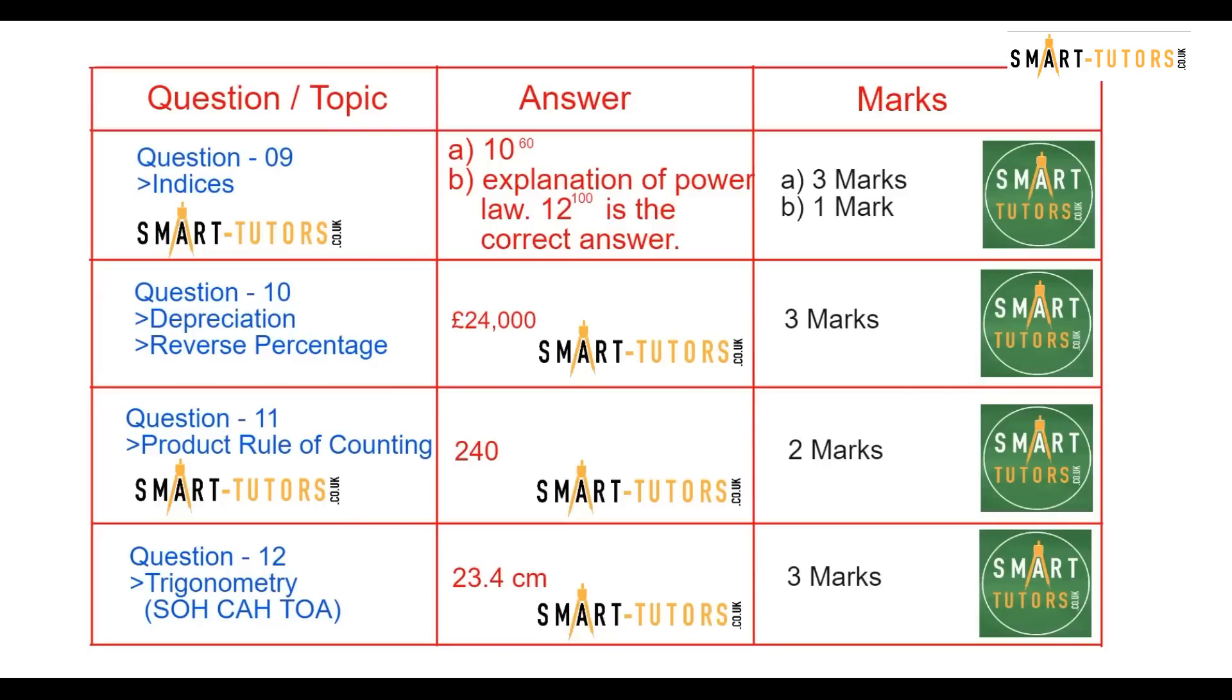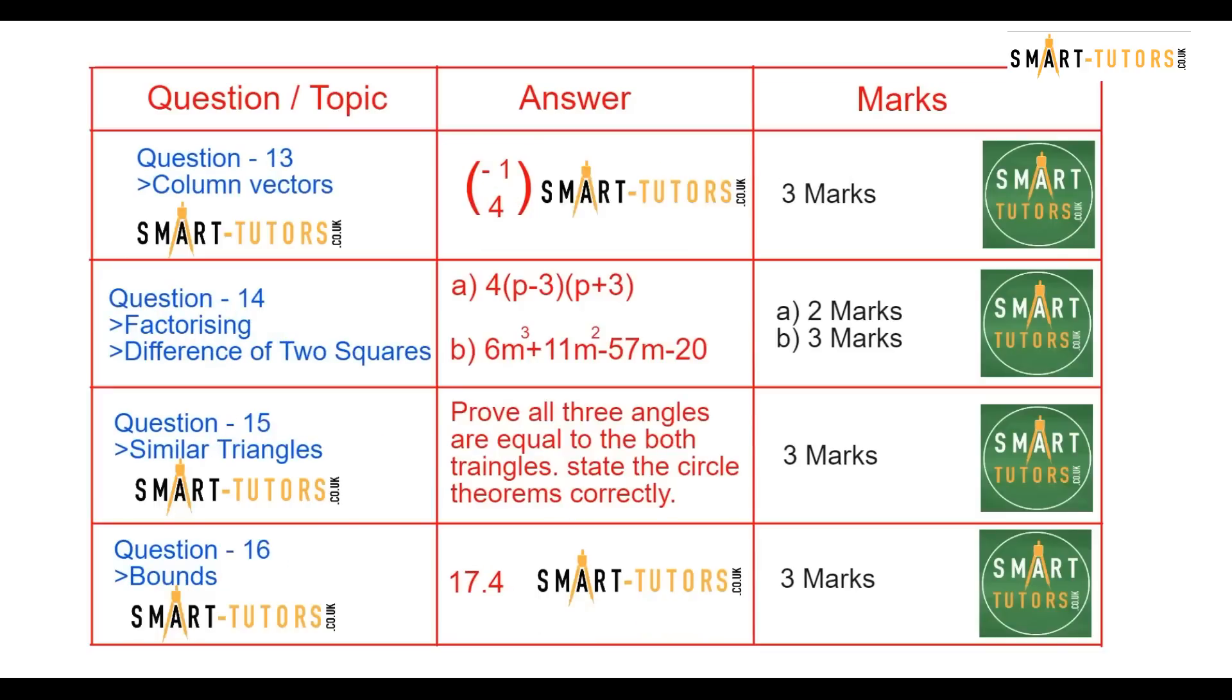Question number 12. Trigonometry. SOH CAH TOA. The answer is 23.4. Straightforward question. And question number 13 is column vectors. We have done similar questions in our revision guide. The correct answer is minus 1 and 4. 3 marker.